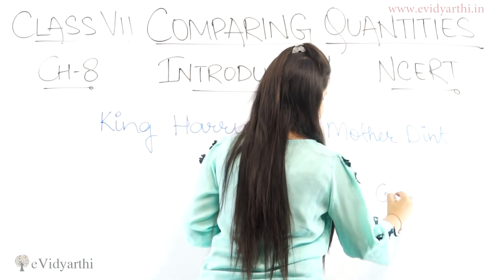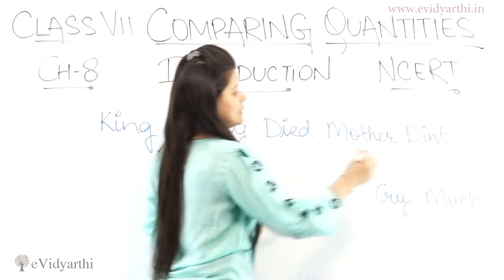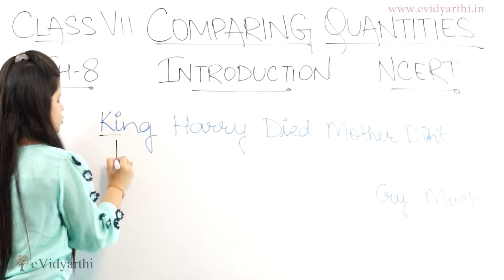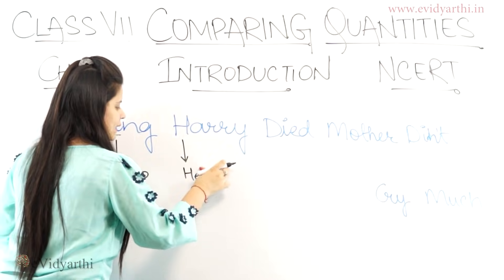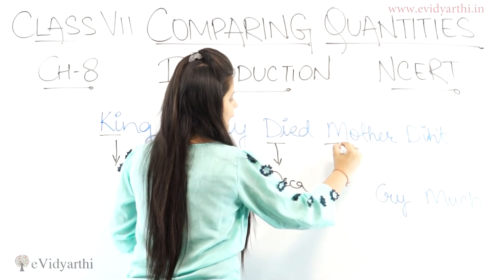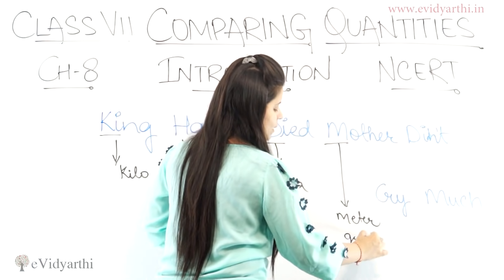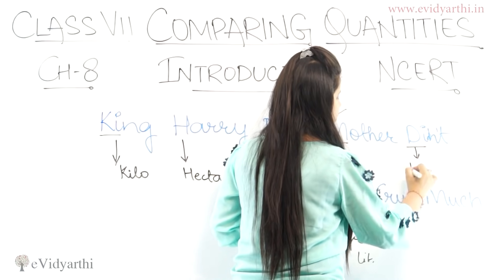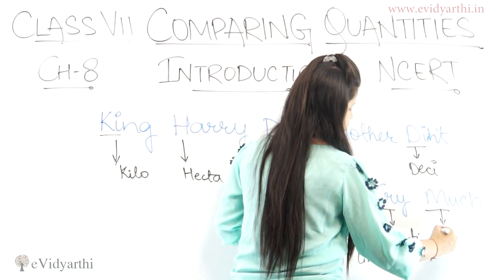We have less space so I am writing it here. For any unit — whether it be meter, gram, or liters — it stands for this M. Then we have D which is for deci, then we have C which is for centi, and then we have M which is for milli.